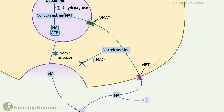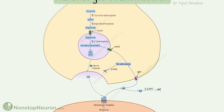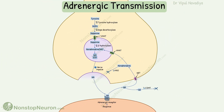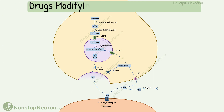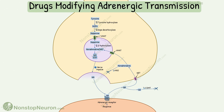The remaining noradrenaline in the synaptic space diffuses away and is degraded by catechol-O-methyltransferase enzyme. This is the normal adrenergic transmission. Now let's see drugs targeting different steps in this process.